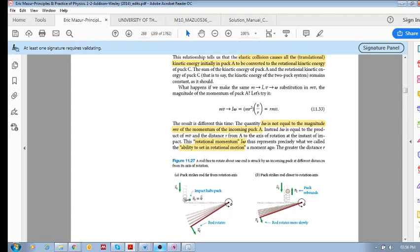The same puck moving at the same speed but hitting a rod. So we have a rod that's able to rotate about this right-hand side. It can rotate like that. In this picture we have the puck hitting the rod right at the end of the rod, and in this case we have the puck hitting the rod much closer to the axis of rotation.